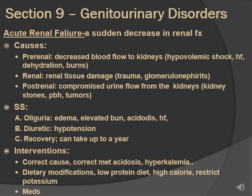The patient will go through four stages. First is the onset — whatever caused it. Then the oliguria phase: decreased urine output, edema, elevated BUN, acidosis signs, heart failure signs. Then the diuretic stage: they keep urinating everything out, so they'll have hypotension and the opposite electrolyte issues. Then the recovery stage, which can take up to a year for kidney function to return to baseline.